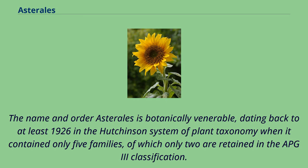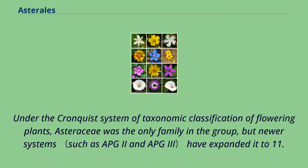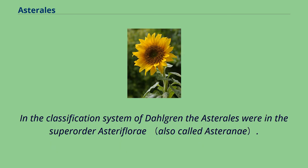The name and order Asterales is botanically venerable, dating back to at least 1926 in the Hutchinson system of plant taxonomy, when it contained only five families, of which only two are retained in the APG3 classification. Under the Cronquist system of taxonomic classification of flowering plants, Asteraceae was the only family in the group, but newer systems have expanded it to 11. In the classification system of Dahlgren, the Asterales were in the superorder Asteriflory.